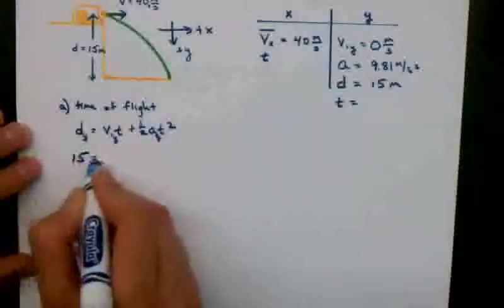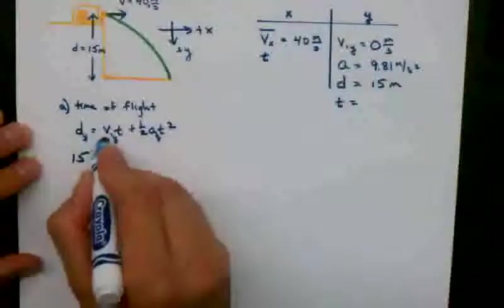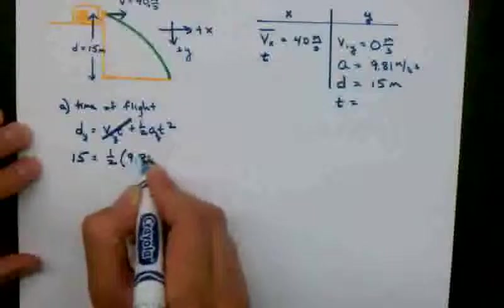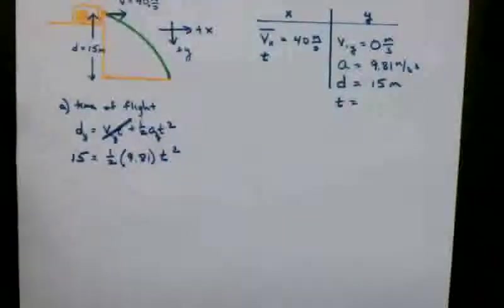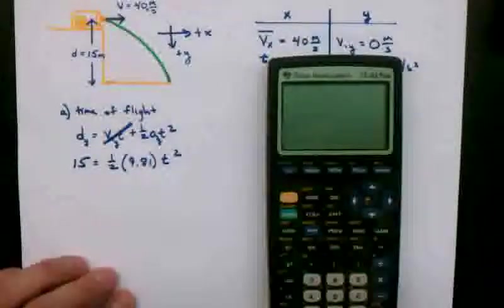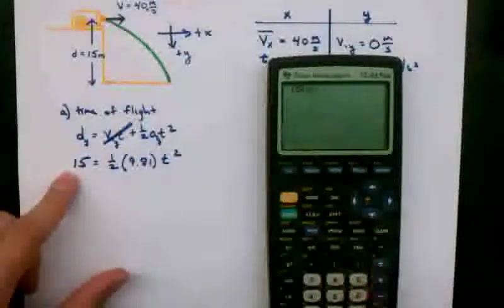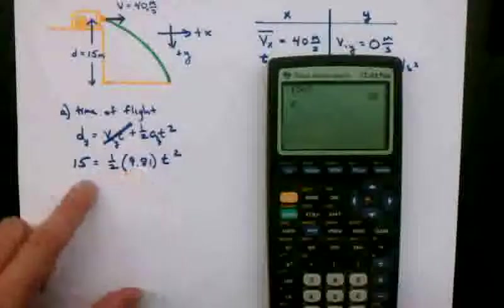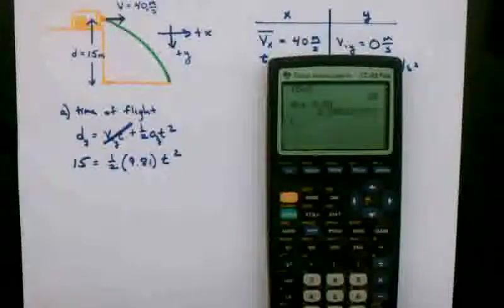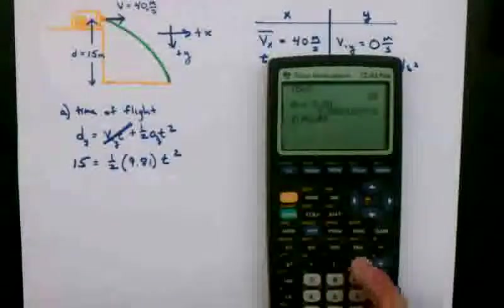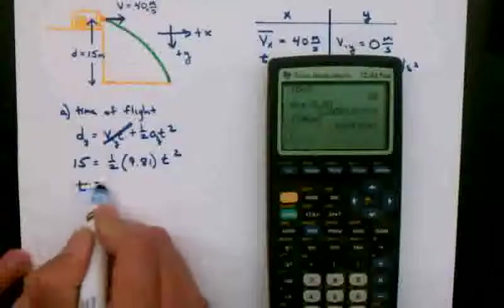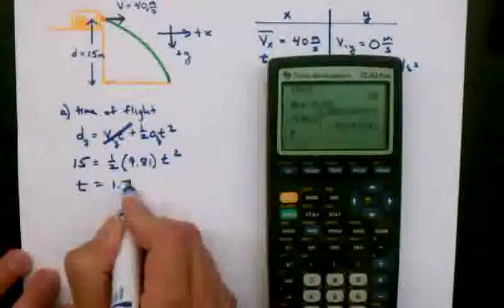So 15 is equal to, the initial is 0, so 0 times t is 0, I'll just cross that out, 1 half, 9.81 t squared. So in my calculator, I'll put 15. To bring the 1 half to the other side, I can multiply by 2. To bring the 9.8 to the other side, I'll divide by 9.81. And then I'll be left with t squared equals 3.058. If I take the square root of that, I get t is equal to 1.75 seconds.